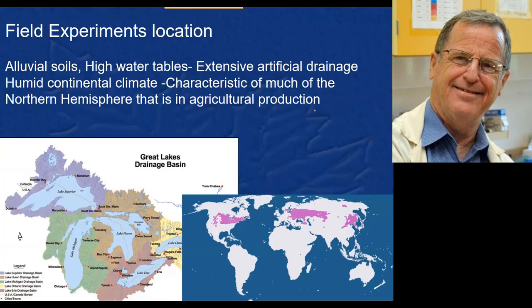These experiments are done in Ontario, Canada, on the north shore of Lake Erie. The climate here is called a humid continental climate and looking at the world map in the bottom right-hand corner, the pink areas share that climate — northeastern United States moving into Europe and eastern Europe, parts of Russia, and parts of China. It certainly would not be shared, for example, in south Texas.